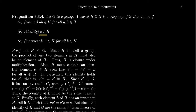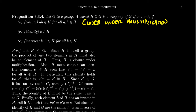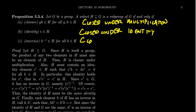To be a subgroup, H also has to contain the identity, and given any element in H, the inverse of that element must also be in H. We say H is closed under multiplication, closed under the identity — meaning the identity is in there — and closed under inverses. You can think of the inverse map as a unary operation, a function with one input, and H has to be closed under that function as well.